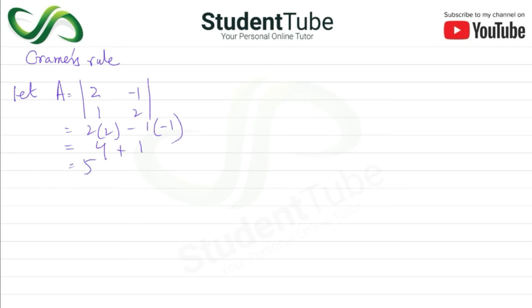For Ax, we replace with c values: [-2, -1; 3, 2], which is [-2, -1; 3, 2]. So -2 times 2 minus 3 times -1: -4 minus minus plus 3 equals -1. This is Ax.